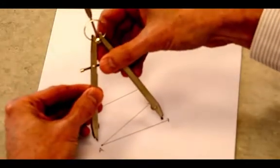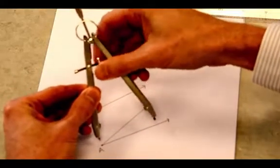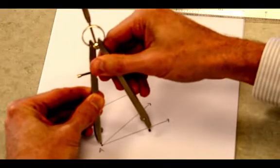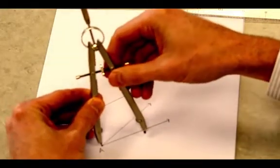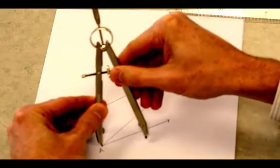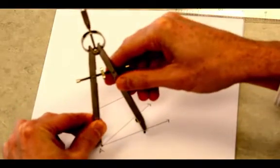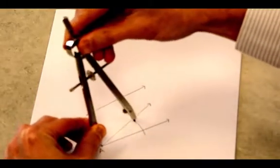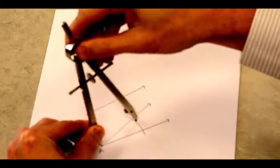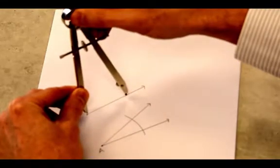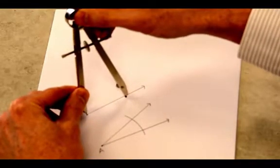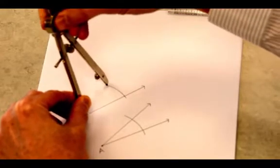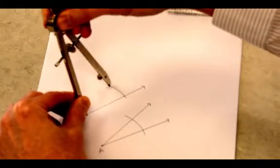Then I'm going to take my compass and I'm just going to put the point on the vertex of my first angle that I'm trying to copy. And then I'm going to carefully make an arc like that. What I'm doing is I'm marking how far out I'm going to be placing my compass to finish copying the angle.